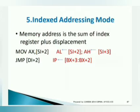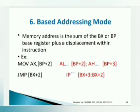The fifth one is the indexed addressing mode. The index will be mentioned in the instruction. For example: MOV AX, SI+2 — where SI is the index register. By adding that offset we get the address which contains the data.